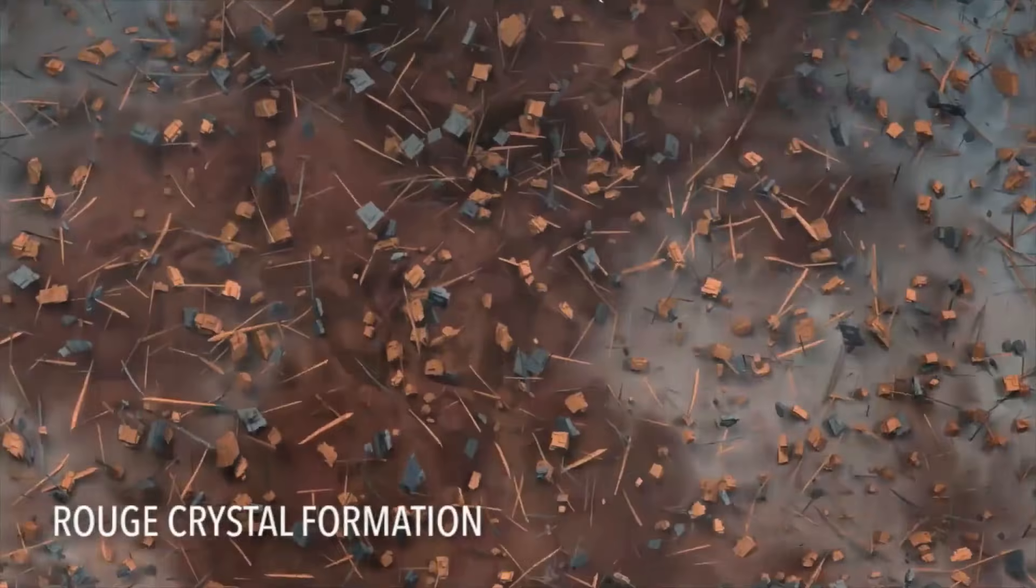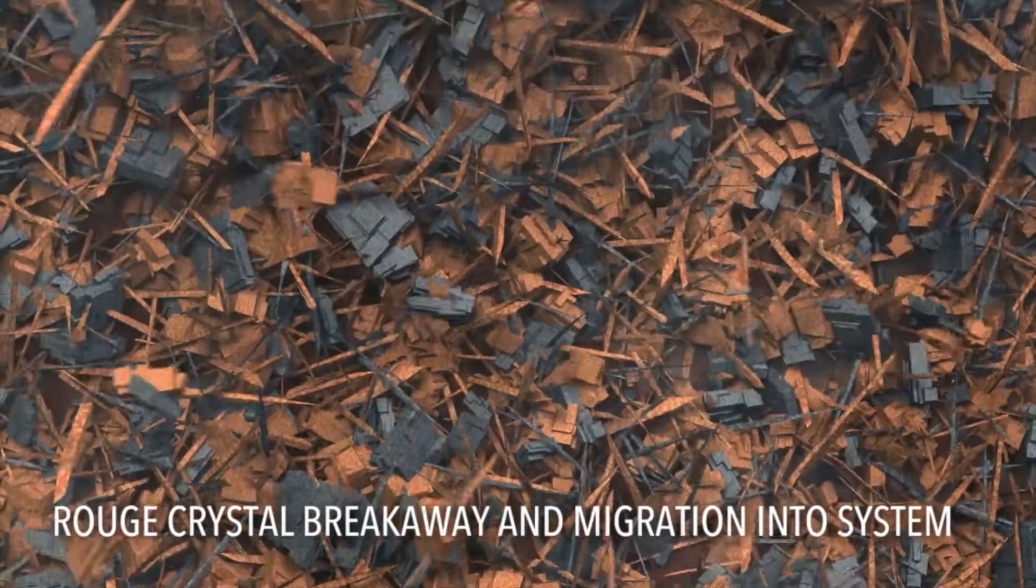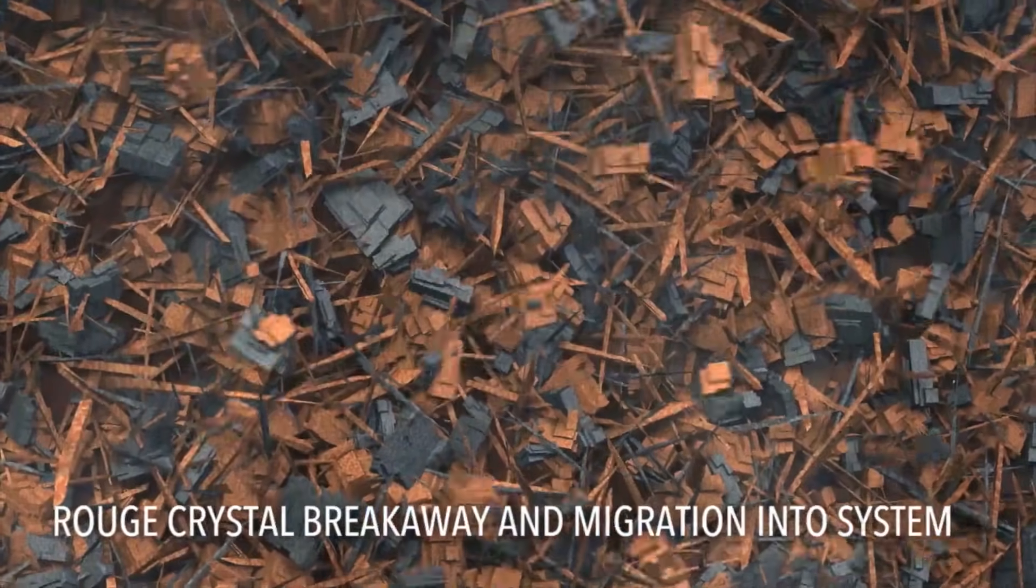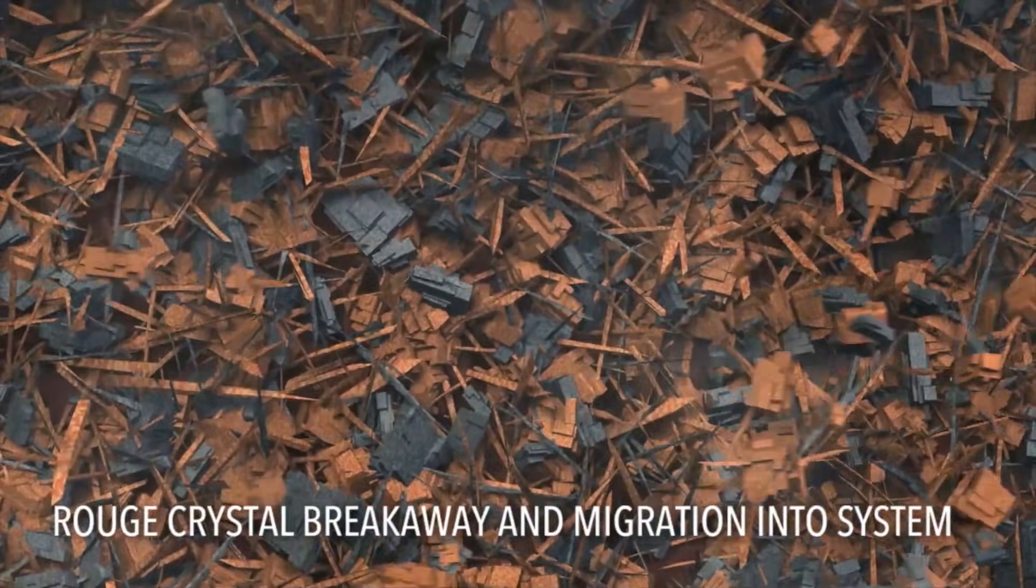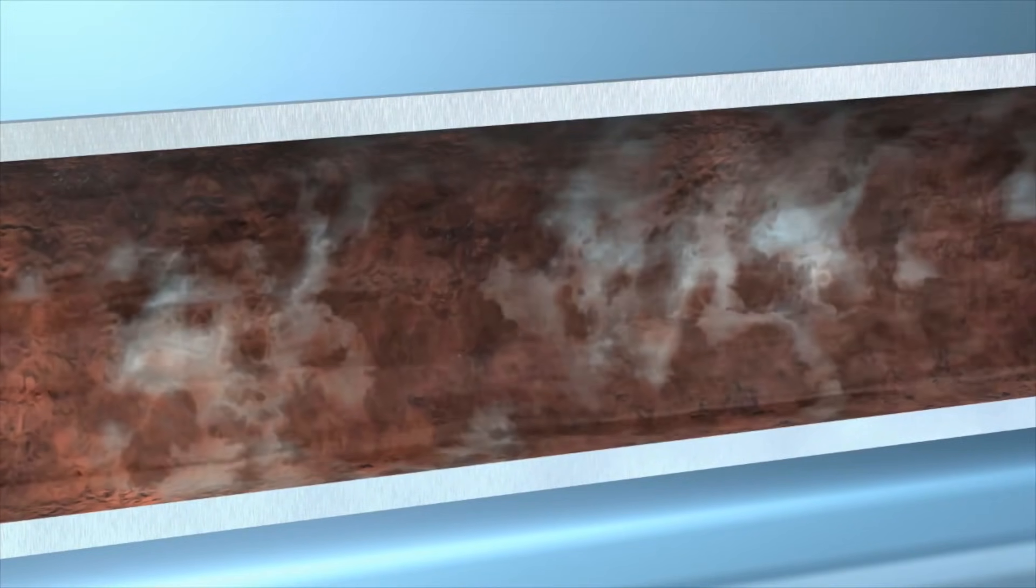Here in the beginning, what you see is processing beginning and slowly the rouge builds up within the system. And as that rouge builds up, the particles of rouge begin to migrate down into the system and into the process fluids.